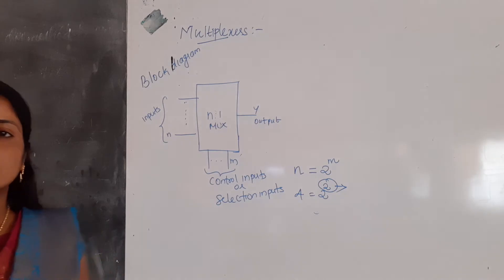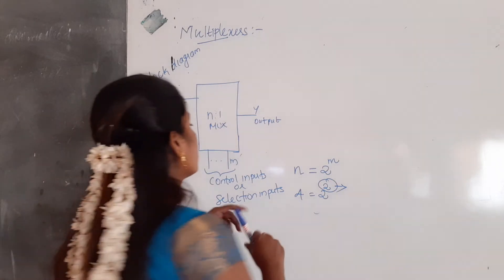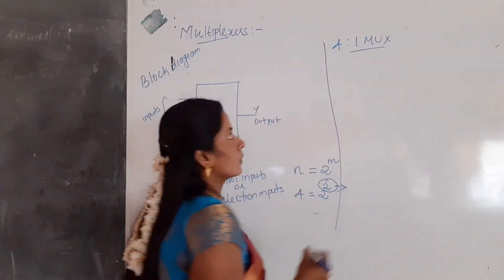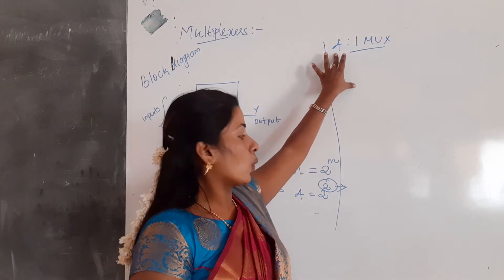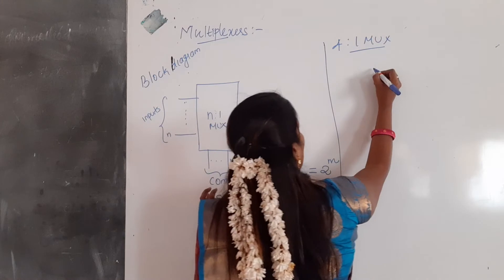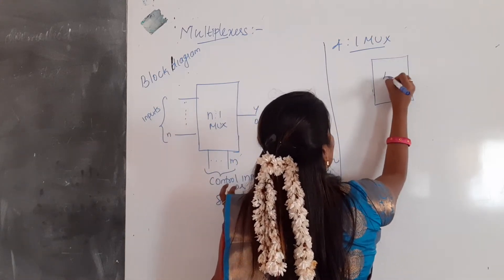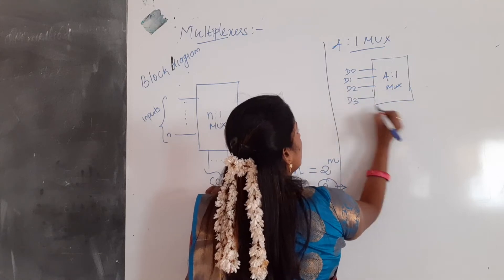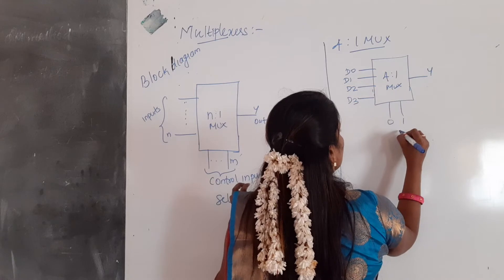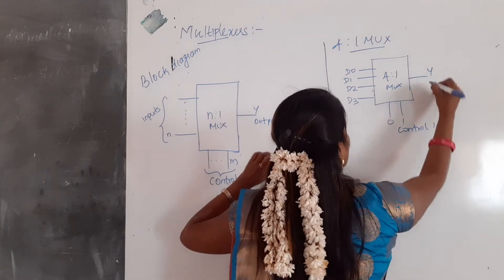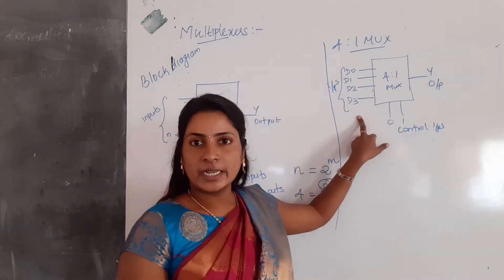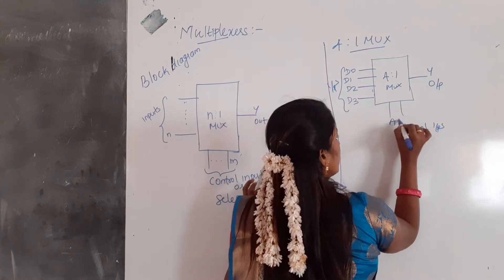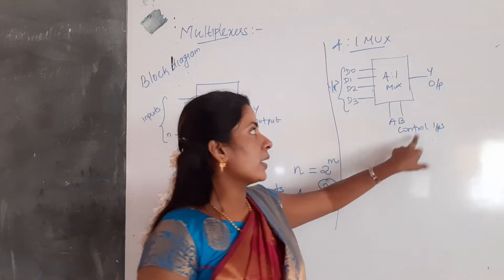Now I am going to develop a 4-to-1 multiplexer. It has 4 inputs and one output. If the input is 4, the control inputs are 2 (since 2^2 = 4). The block diagram has 4 data inputs: D0, D1, D2, D3, and 2 control inputs which we can name A and B, and 1 output.